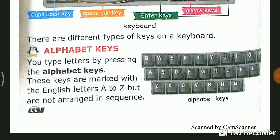There are different types of keys on the keyboard. You type letters by pressing alphabet keys. These keys are marked with English letters A to Z but are not arranged in sequence. These alphabet keys are not arranged in sequence, but they are A to Z completely.